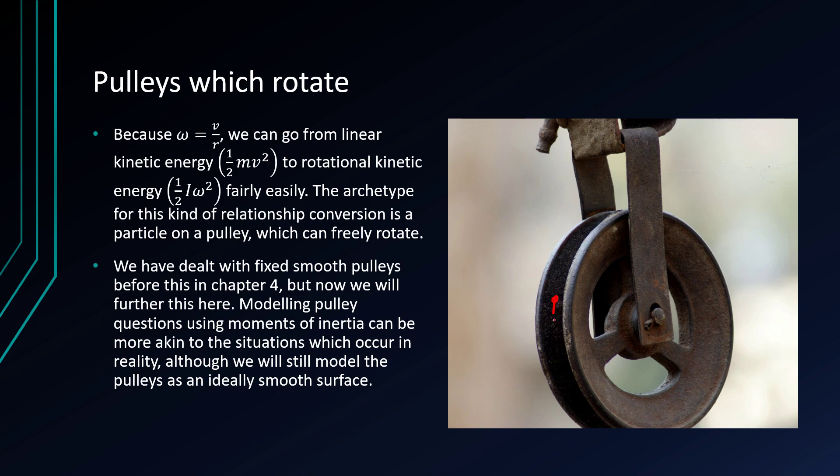So here, if there's a block on here, the block will have an acceleration downwards, but it will also have a linear kinetic energy of a half mv squared. But the pulley also rotates. So the pulley itself will have a rotational kinetic energy of a half i omega squared.